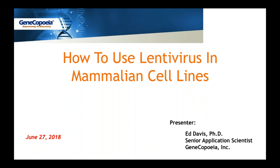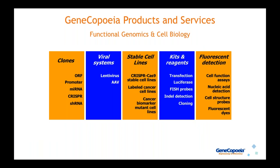With that, let's get started with the webinar. So I'm going to start off by telling you a little bit about who we are at GeneCopia. We are a company that provides many products and services in the fields of functional genomics and cell biology. The largest part of our operation is in the production of various types of plasmid clones — we were founded as the original provider and one of the largest providers of ORF or open reading frame clones.